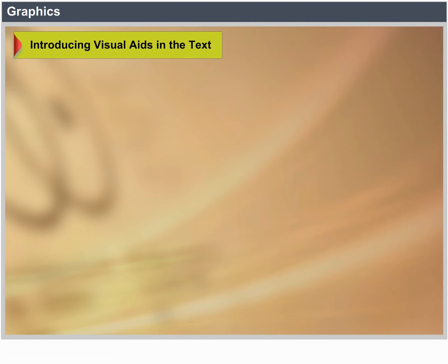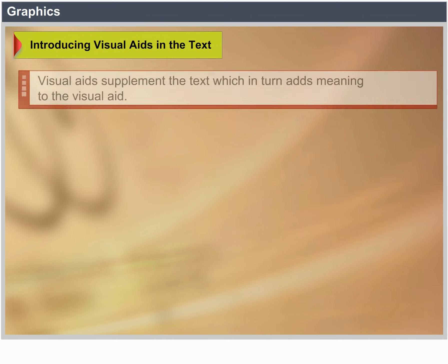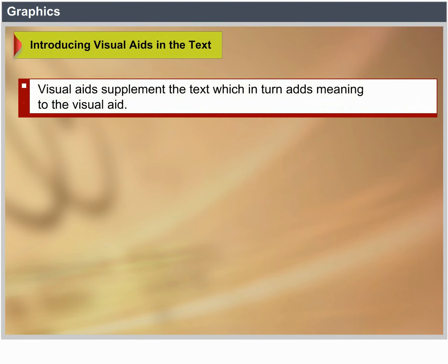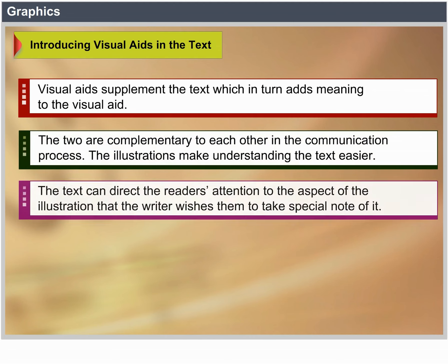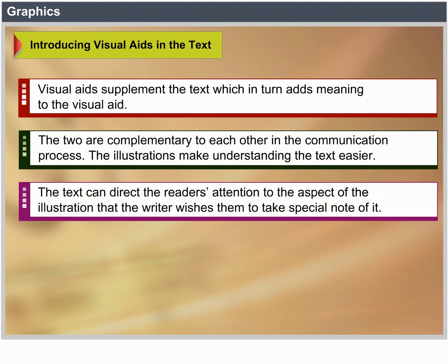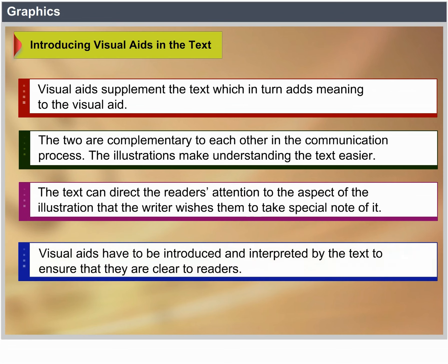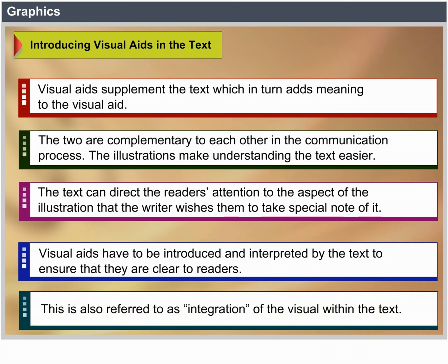Introducing visual aids in the text. Visual aids supplement the text while the text adds meaning to the visual aid — the two are complementary in the communication process. The illustrations make understanding the text easier. On the other hand, the text can direct the reader's attention to that aspect of the illustration that the writer wishes them to take special note of. Visual aids have to be introduced and interpreted by the text, which is also referred to as integration of the visual within the text.